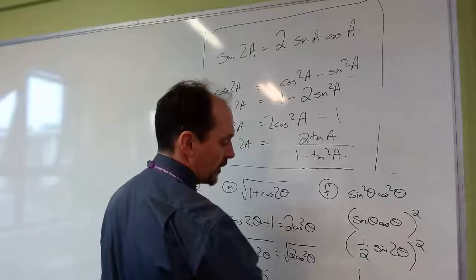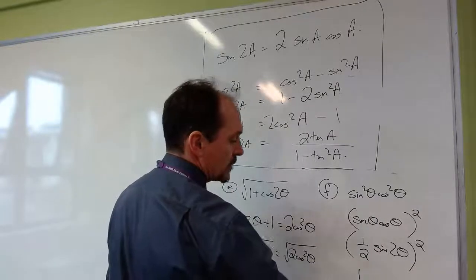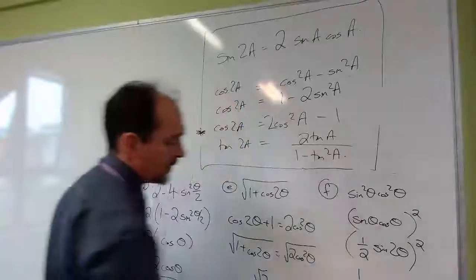So we're squaring that. A half squared is a quarter. Sine squared, 2 theta. That's the answer they're looking for.